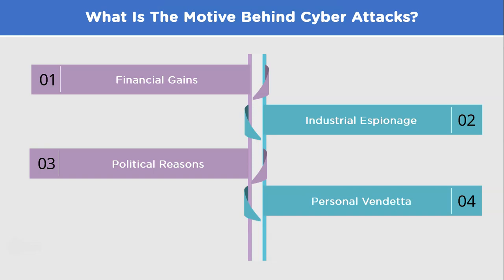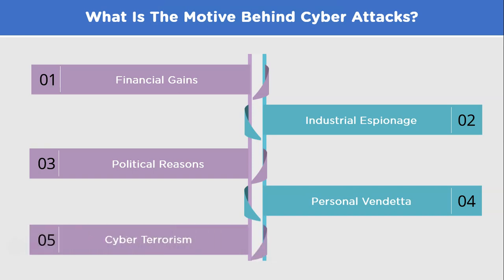Fourth, personal vendetta or revenge. Some cyber attacks are carried out by individuals seeking revenge or retaliation against a person or organization they hold a grudge against. Finally, cyber terrorism. In rare cases, cyber attacks can be carried out as an act of terrorism to create fear, chaos, and widespread disruption. These attacks aim to cause significant harm to society and can target critical infrastructure such as power grids or transport systems. Understanding the motives behind cyber attacks helps in developing effective cybersecurity strategies to mitigate and respond to these threats.